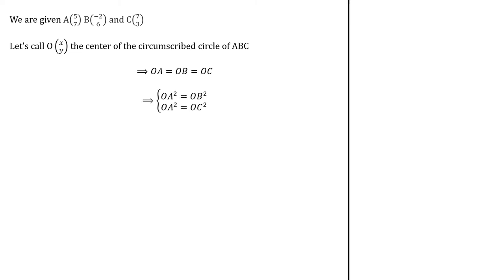We are given points A, B, C, and O is the center of the circumscribed circle of this triangle ABC. So we have that OA equals OB equals OC. We can rewrite as follows: OA squared equals OB squared and OA squared equals OC squared.